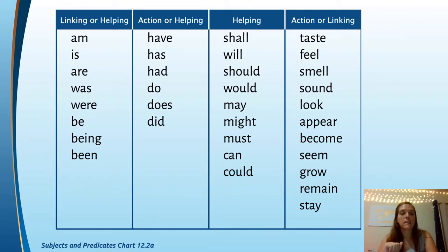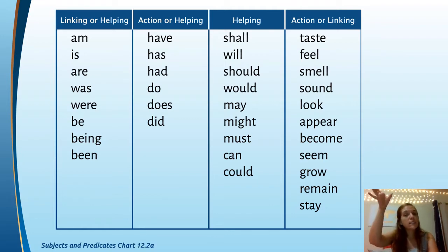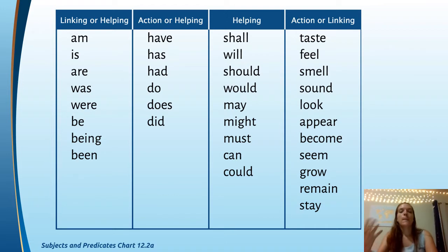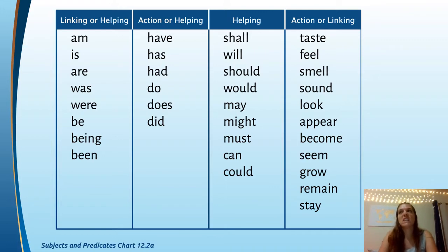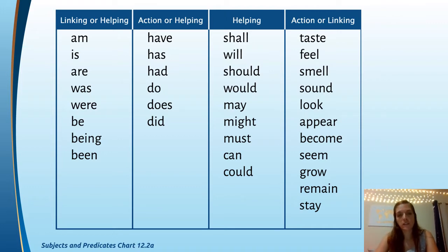Here is the verb list: am, is, are, was, were, be, being, been, has, have, had, do, does, did, shall, will, should, would, may, might, must, can, could. There are also words that look like action words but can be linking verbs — for example, 'she tasted the food' versus 'that tastes funny.' In the second case, 'tastes' is not an action. Either way, these are easy to spot.